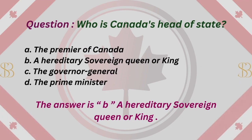Question: Who is Canada's head of state? A. The Premier of Canada. B. A hereditary sovereign queen or king. C. The Governor-General. D. The Prime Minister. The answer is B. A hereditary sovereign queen or king.